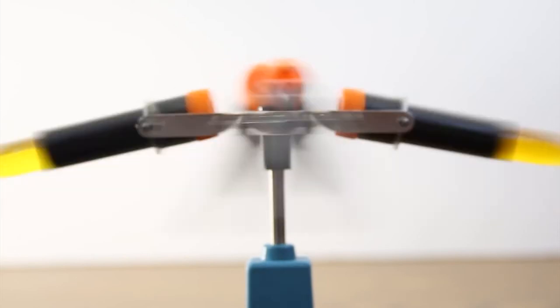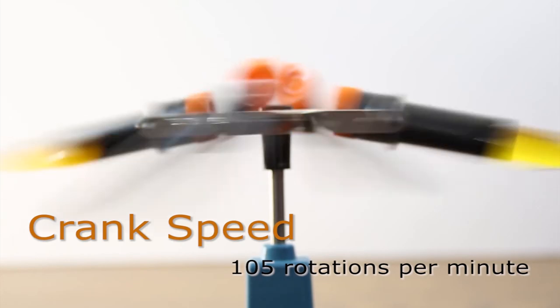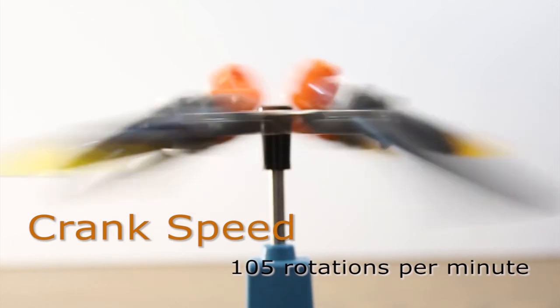To obtain a proper relative centrifugal force, the centrifuge must be cranked at 105 turns per minute to achieve a tube revolution per minute of 1,692.